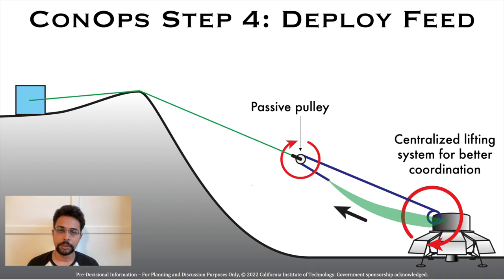We use a dual spool system to deploy the feed and reflector. This also allows us to control the deployment from the lander in a centralized manner.